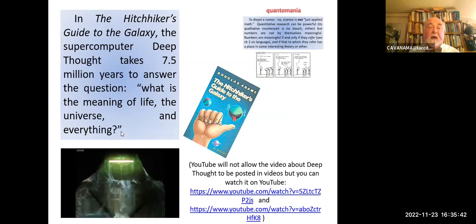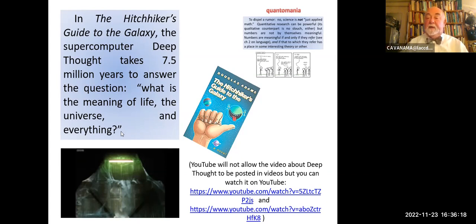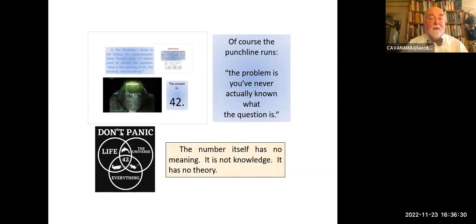In Douglas Adams' book The Hitchhiker's Guide to the Galaxy, there's a supercomputer called Deep Thought. It takes seven and a half million years to answer the question: what is the meaning of life, the universe, and everything? Normally I show this video when doing live class, but YouTube will not allow you to show the video within a presentation. So you can go directly to either of these two URLs — it's very funny. After seven and a half million years, the supercomputer Deep Thought spits out the answer: 42. And they say, '42?' Well, let me assist the computer — you've never actually known what the question is, so the answer is not going to make any sense. The number itself has no meaning. It is not knowledge. It has no theory.